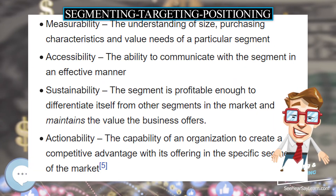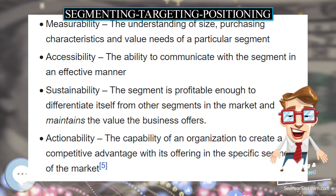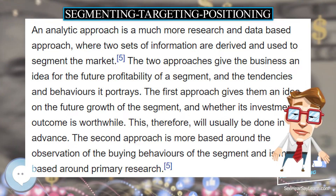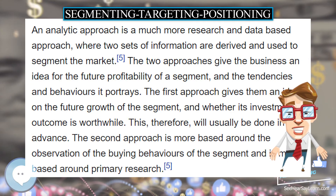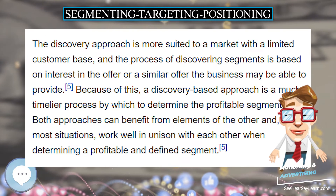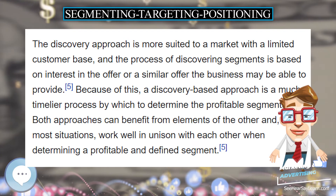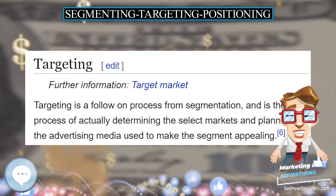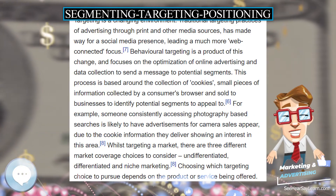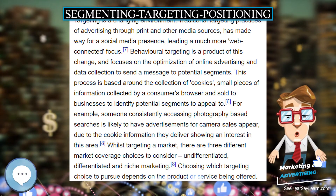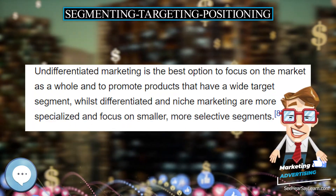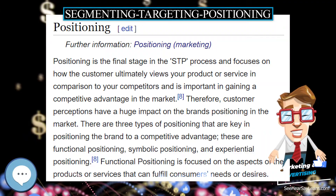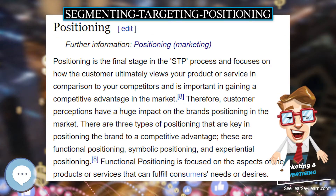Targeting is a follow-on process from segmentation and is the process of actually determining the select markets and planning the advertising media used to make the segment appealing. Targeting is a changing environment — traditional targeting practices of advertising through print and other media sources has made way for a social media presence with a much more web-connected focus. Behavioral targeting is a product of this change and focuses on the optimization of online advertising and data collection to send a message to potential segments.